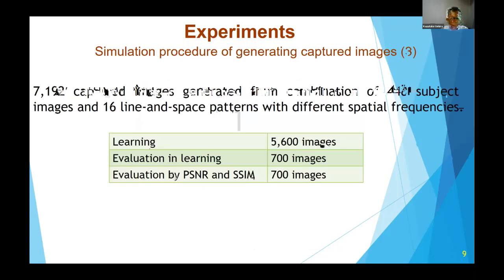We generated 7,192 captured images from the combination of 448 subject images and 16 line-space patterns with different spatial frequencies. Of these, 5,600 were used for learning, 700 were used for evaluating during learning, and 700 were used for evaluation by PSNR (peak signal-to-noise ratio) and SSIM (structural similarity).